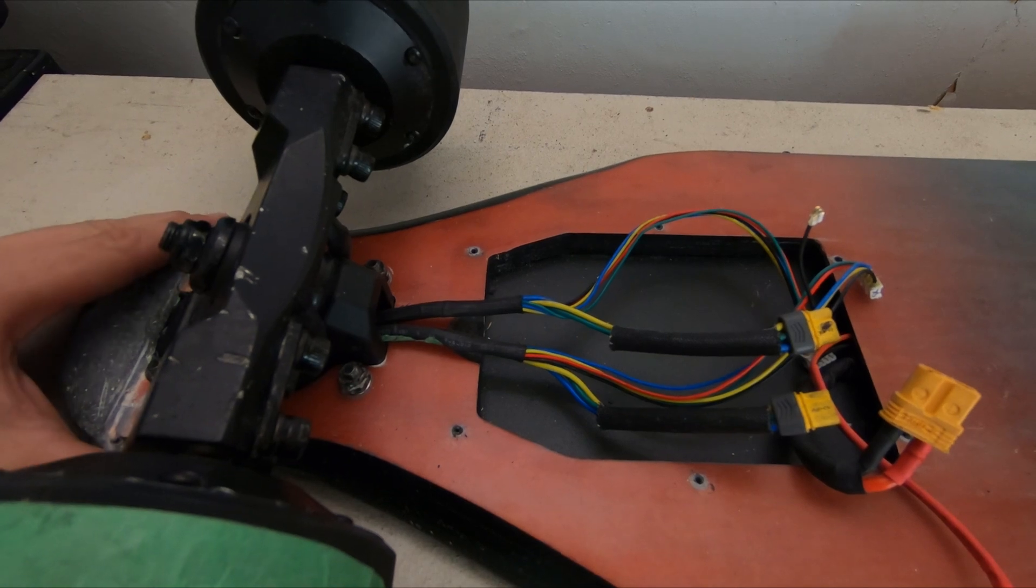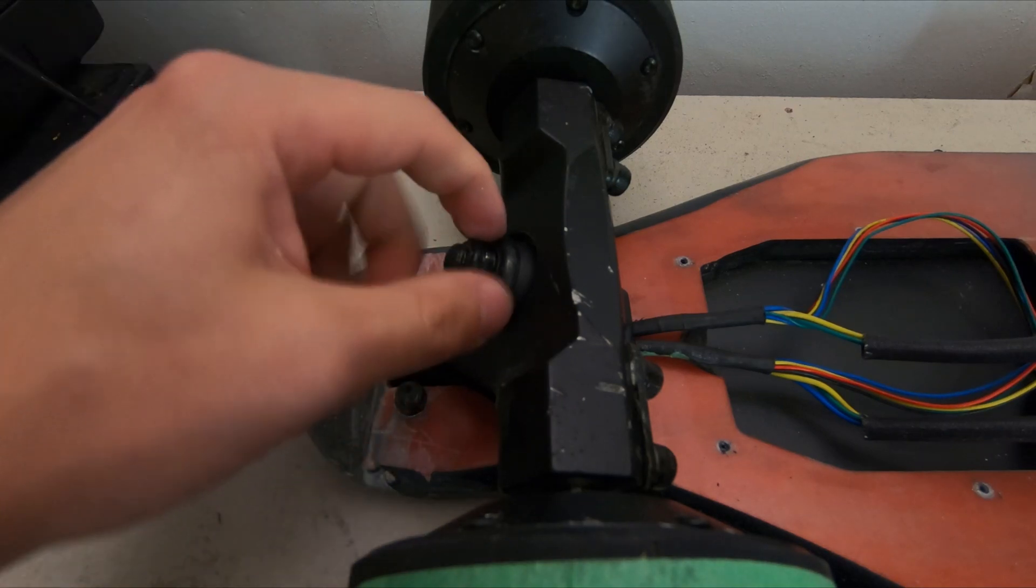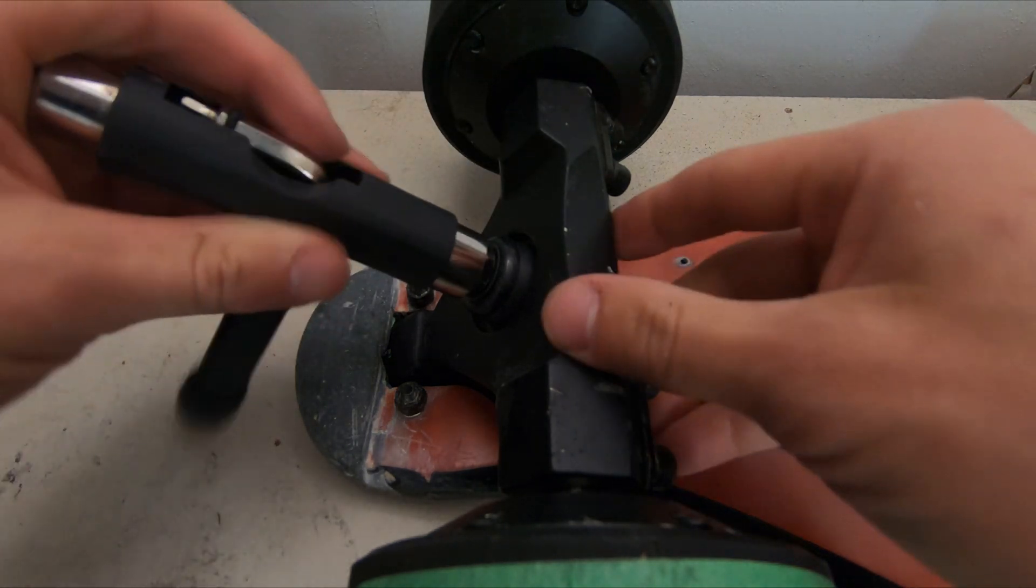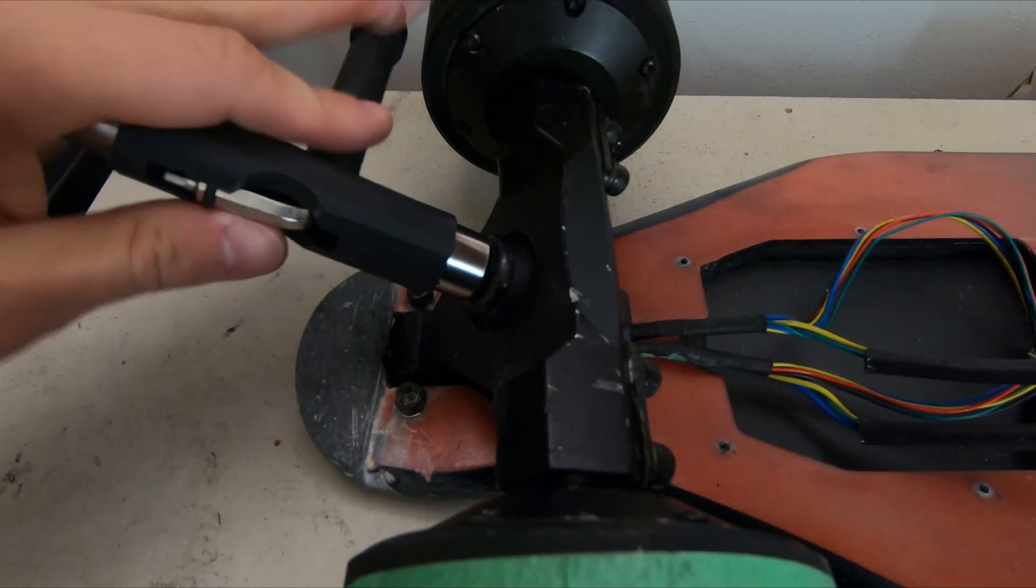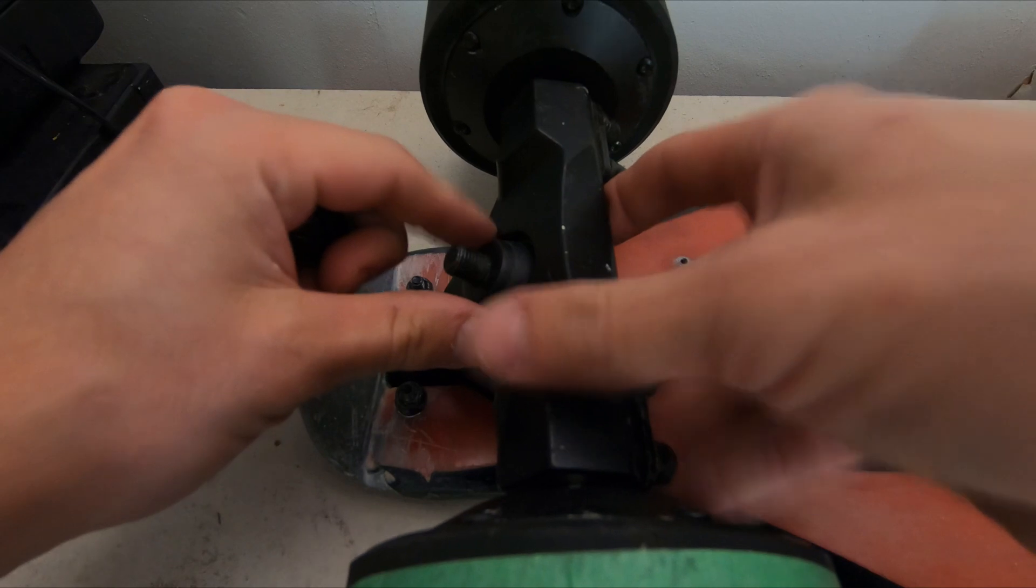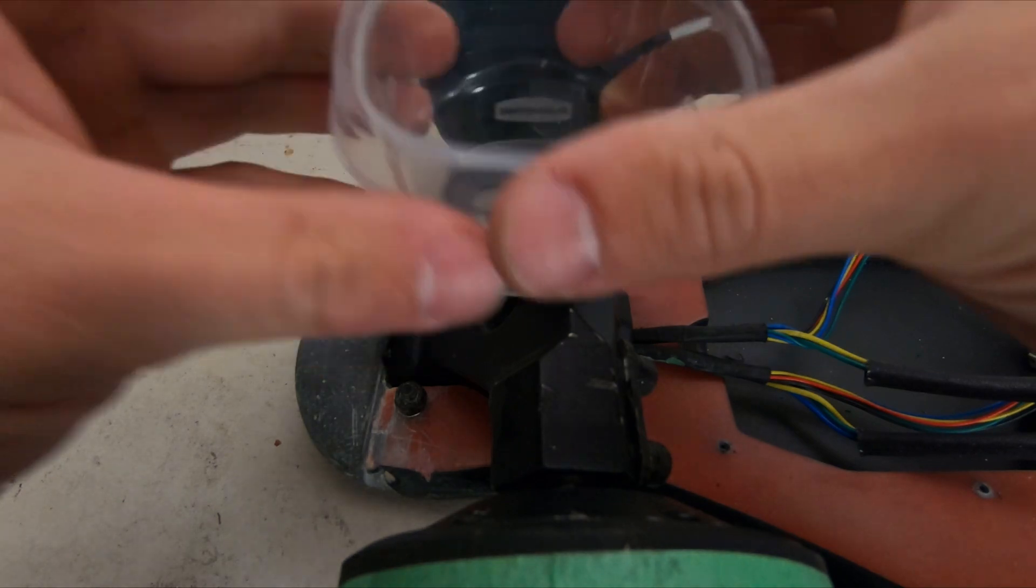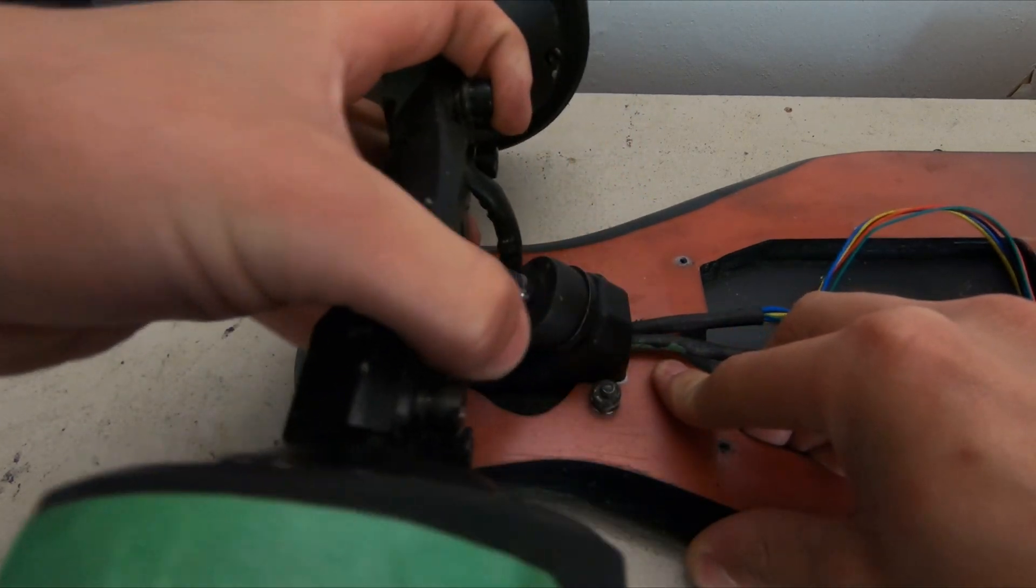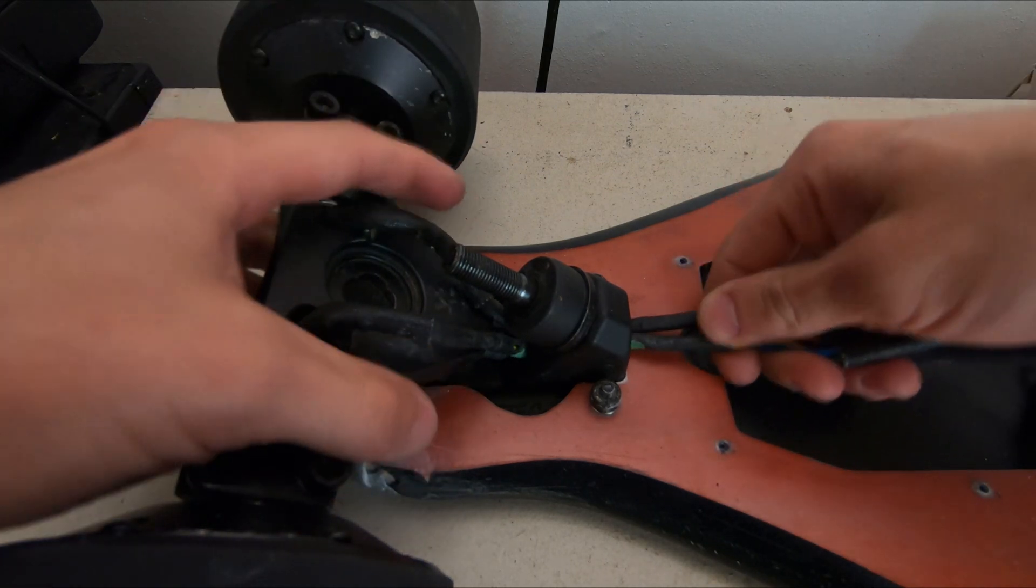So the next thing that I do, once I have the main board undone, is I like to take this part off. And that'll allow us to tilt the trucks back and pull the wires out. So you can use your skate tool here or whatever to undo this, but just like any other skateboard. Some of these pieces get really small, so it's nice to have some sort of container to keep them all in. Now I can tilt the trucks forward. And you can see how you can kind of push these wires through.